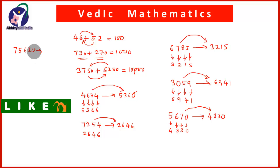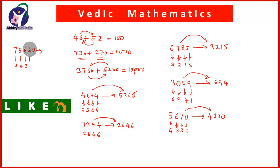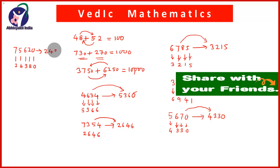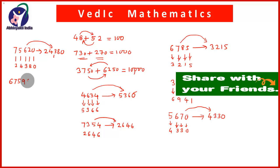Take another number: 75,620. The unit place digit is 0. So: 7 and 2 give 9; 5 and 4 give 9; 6 and 3 give 9; since unit place is 0, make the tens digit give 10: 2 and 8 give 10; and the unit place 0 stays as 0. So the complement of 75,620 is 24,380.